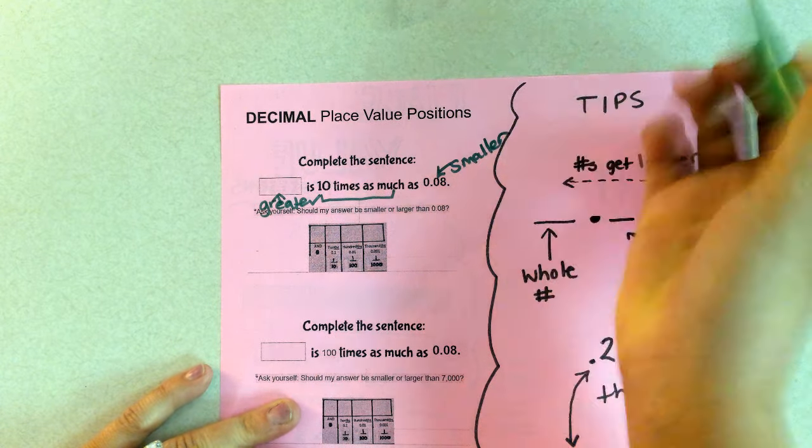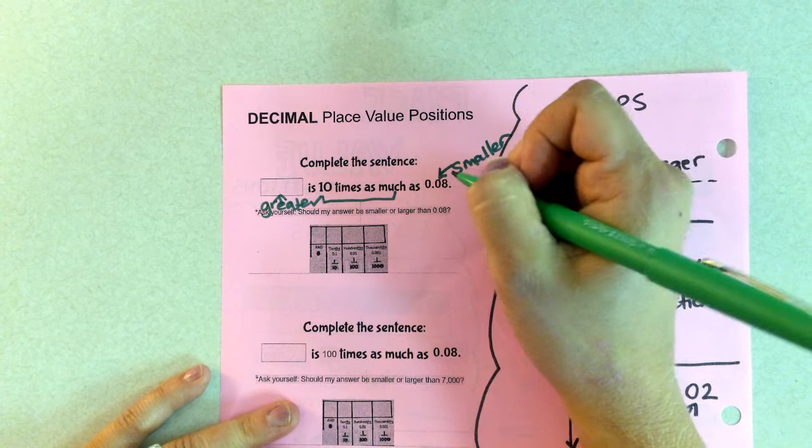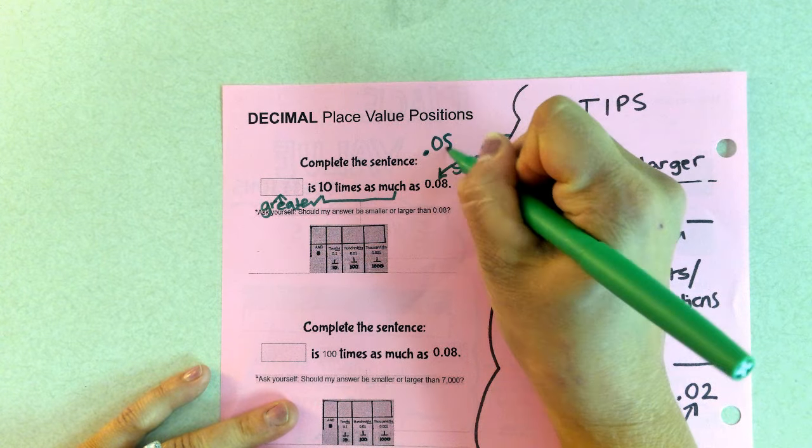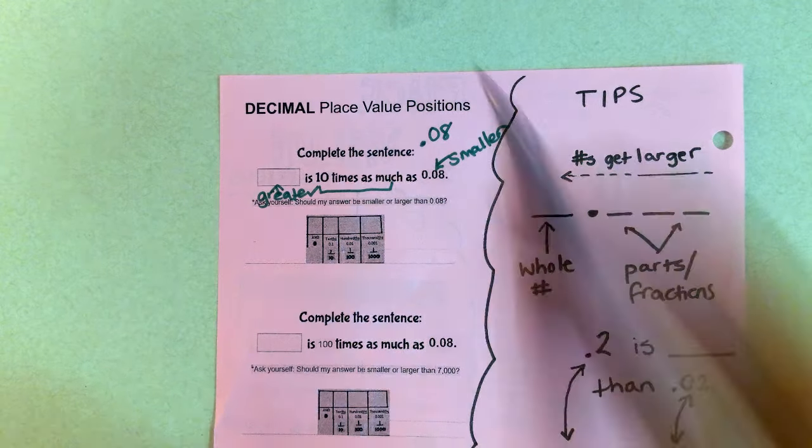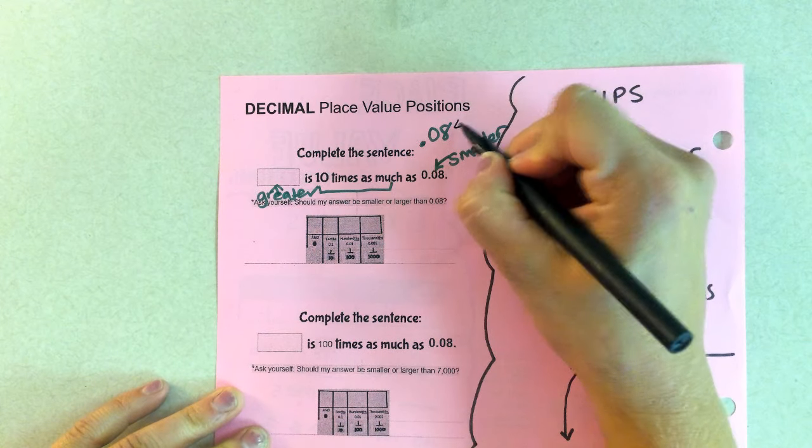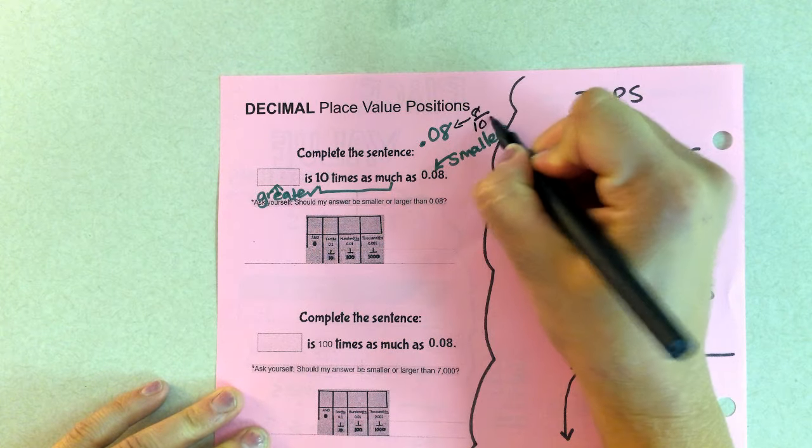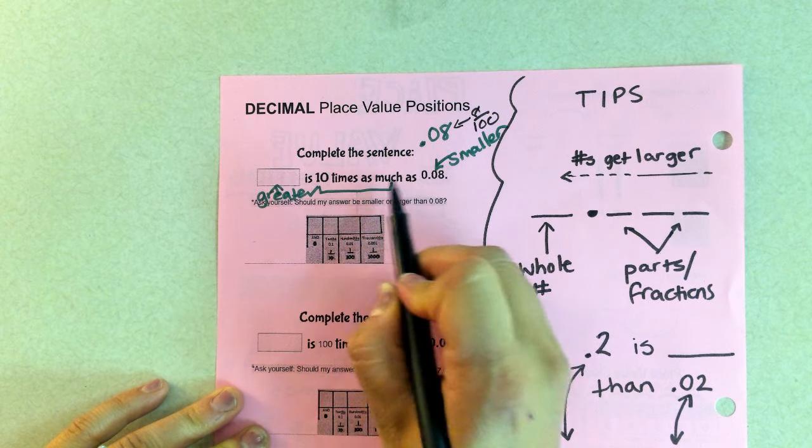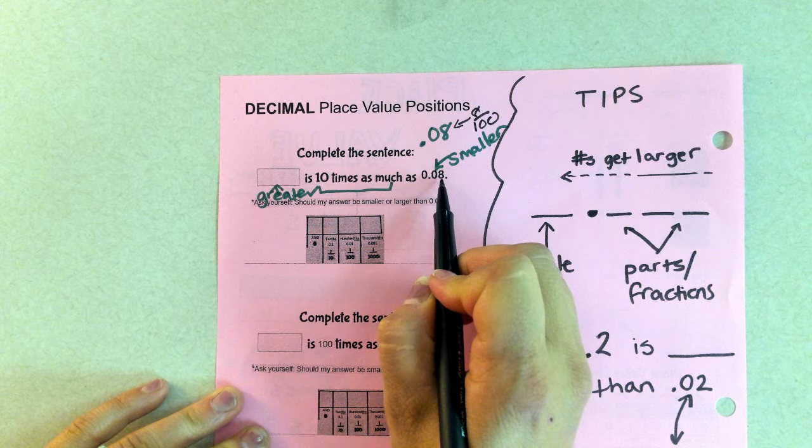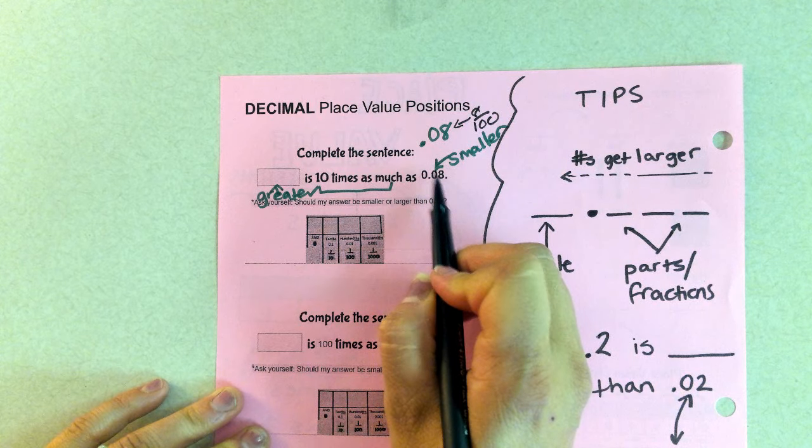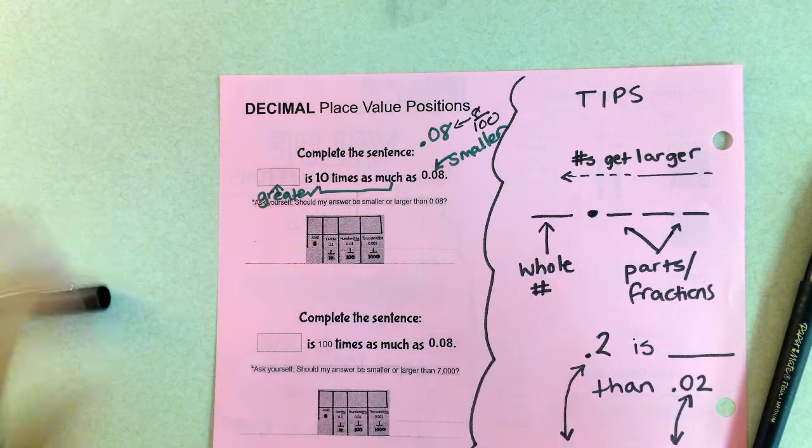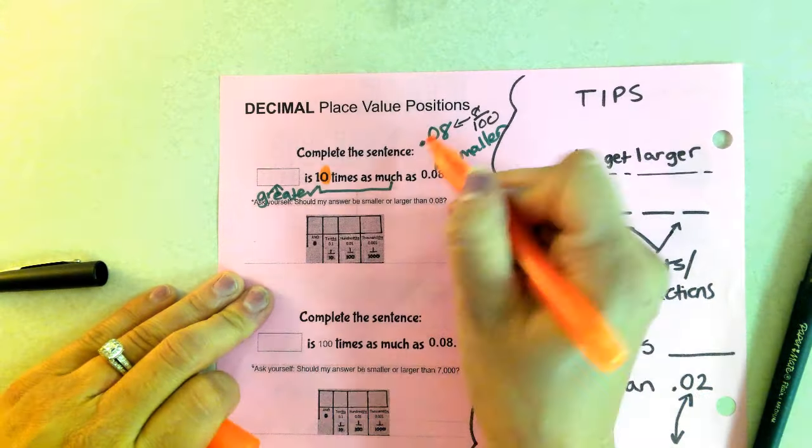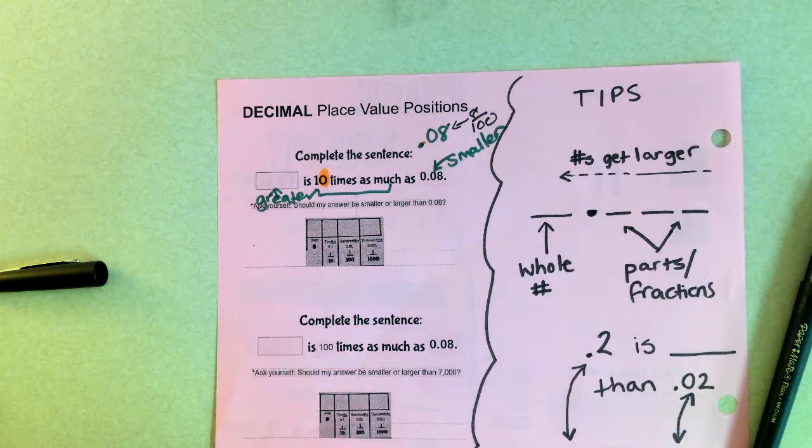My tip to you is use some scrap paper today on your lesson check or your iExcel that you're doing, and I will write the original number, 0.08 or 8 hundredths. Technically this is 8 out of 100. I want this blank to be greater because blank is 10 times as much than 8 hundredths. So because 10 has one zero in it, I'm going to be moving my decimal over one time.